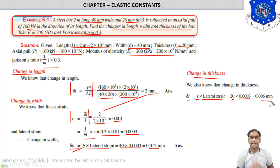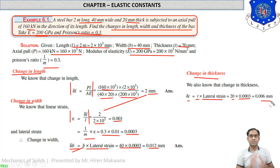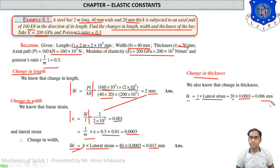This is a simple numerical — just remember that lateral strain means delta-b by b and delta-t by t, so width and thickness are lateral strains, while delta-l by l is linear strain. Poisson's ratio is the ratio of lateral strain to linear strain, and lateral strain can be found using that relationship.